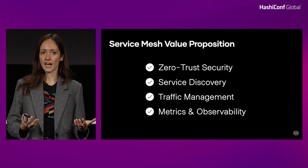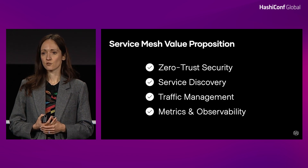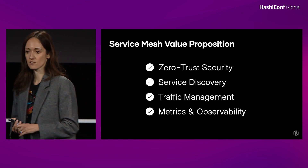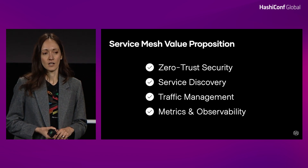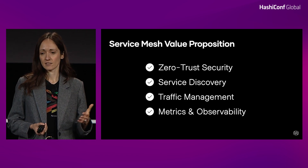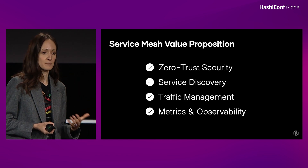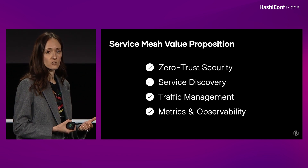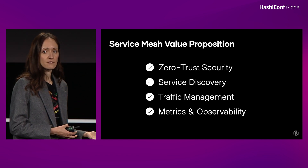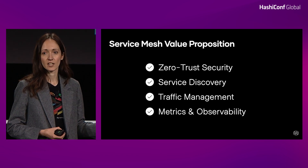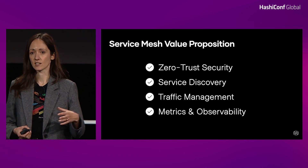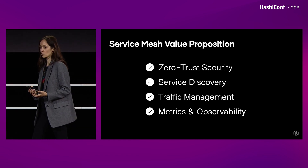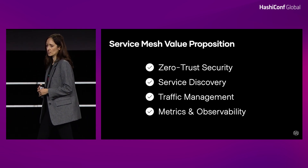Having that abstraction layer gives you several benefits, especially if you're running microservices. The first benefit — and I think the most important reason why people choose a service mesh — is zero trust security. If you have your networking in a separate abstraction layer, it's very easy to add things like TLS encryption and get that for free without a single line of code change to your application.